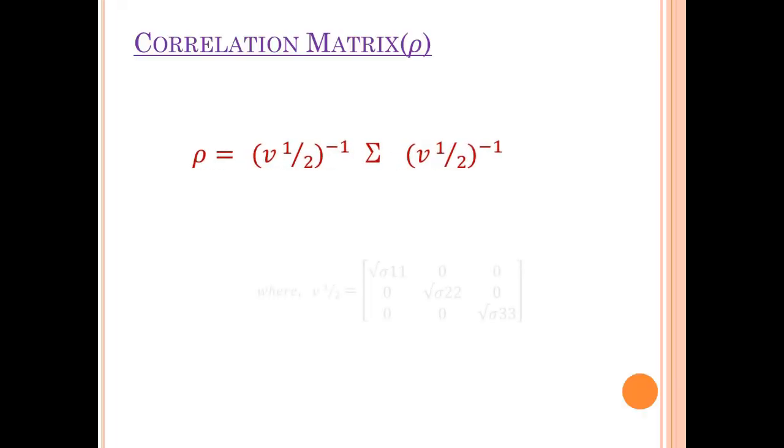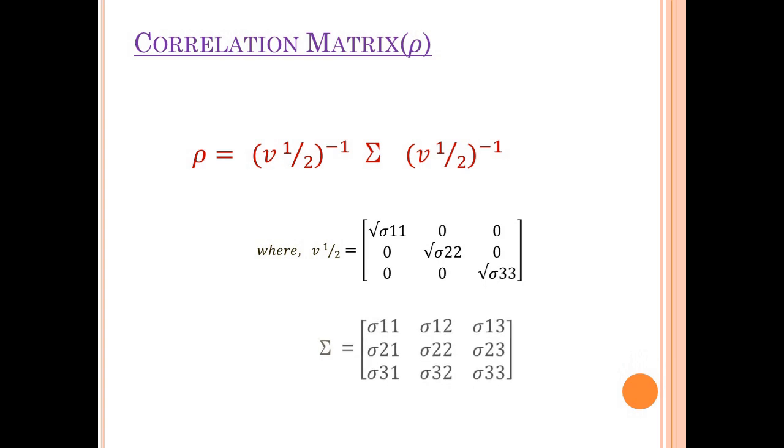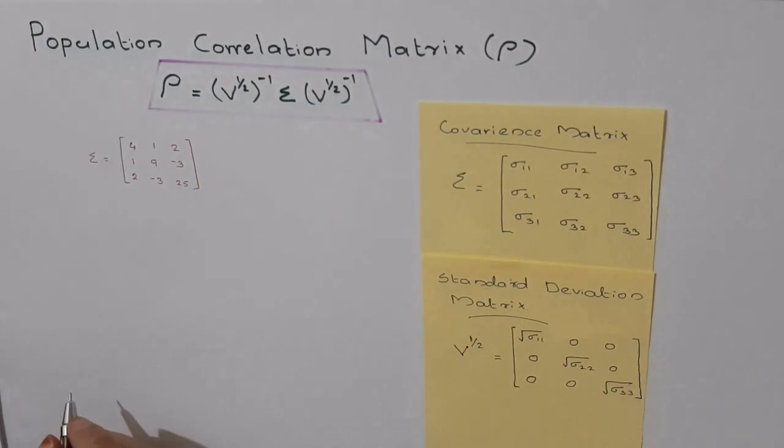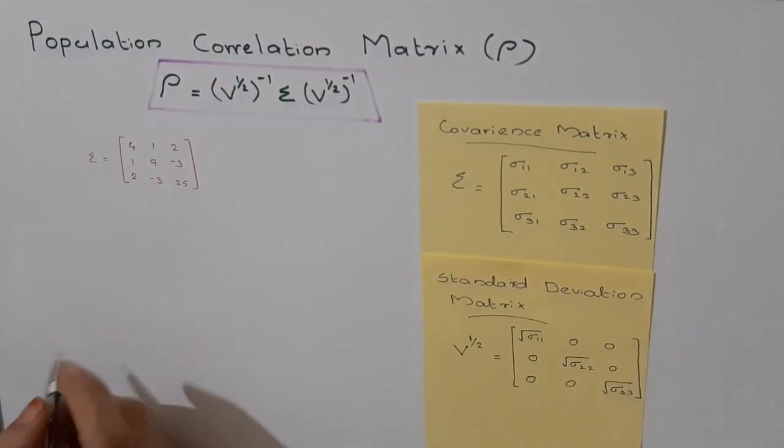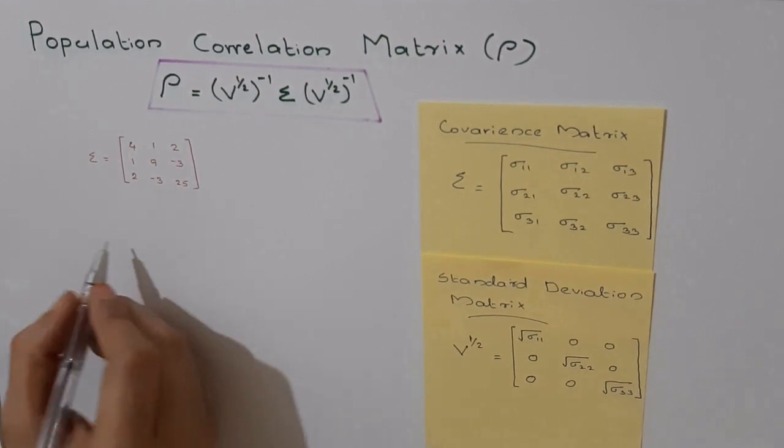How can we calculate the correlation matrix ρ from the covariance matrix Σ? The formula is ρ equals V^(1/2) inverse into Σ into V^(1/2) inverse. Suppose Σ is given by the matrix [4,1,2; 1,9,-3; 2,-3,25]. From this we have to find V^(1/2) first.